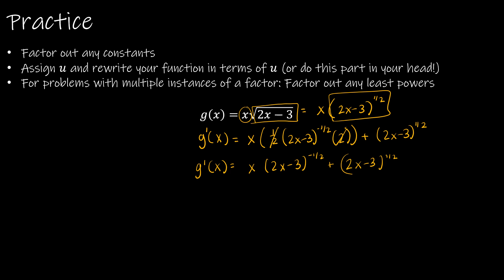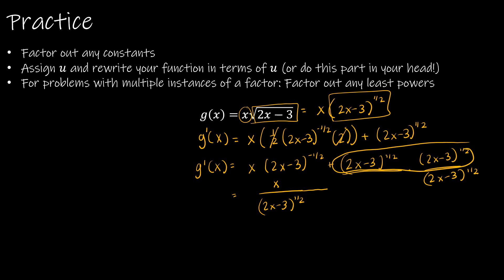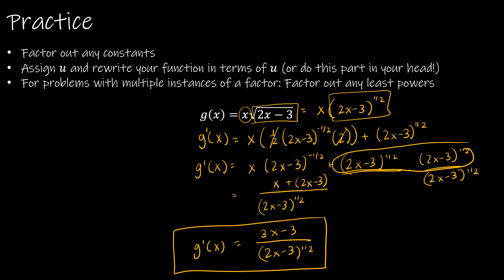Rewriting: x over (2x minus 3) to the one half, plus (2x minus 3) to the one half. To combine into one fraction, multiply the second term by (2x minus 3) to the one half over (2x minus 3) to the one half, giving a common denominator. The exponents one half plus one half equal 1, so the numerator becomes 3x minus 3, and g prime of x equals (3x minus 3) over (2x minus 3) to the one half. You could also factor the numerator as 3 times (x minus 1).